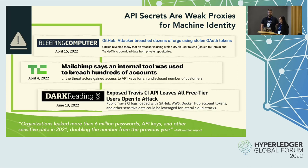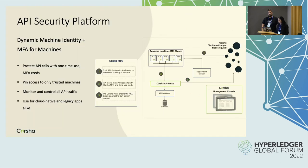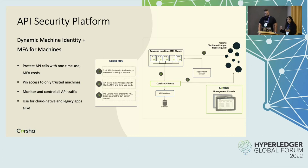As we were putting the platform together, it was very natural for us to leverage something like Hyperledger Fabric as a core part of our platform to manage machine identity. We have built this API security platform and we've been working with Fabric since about 2018.